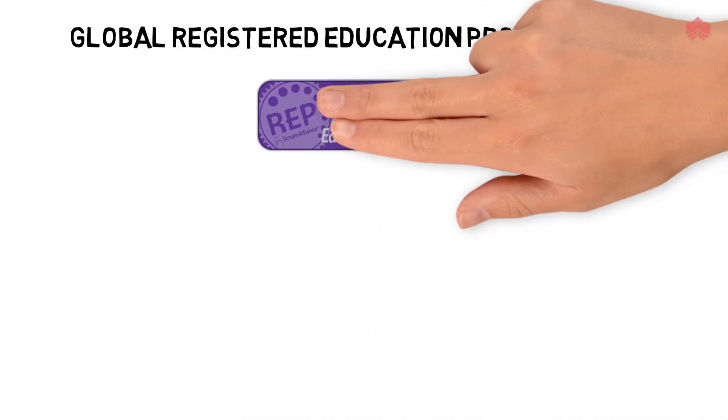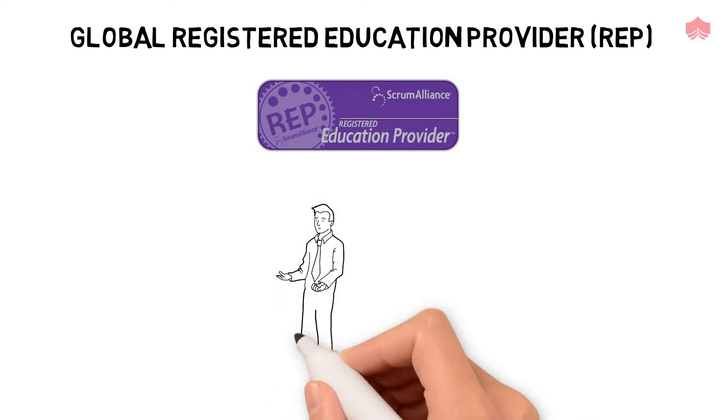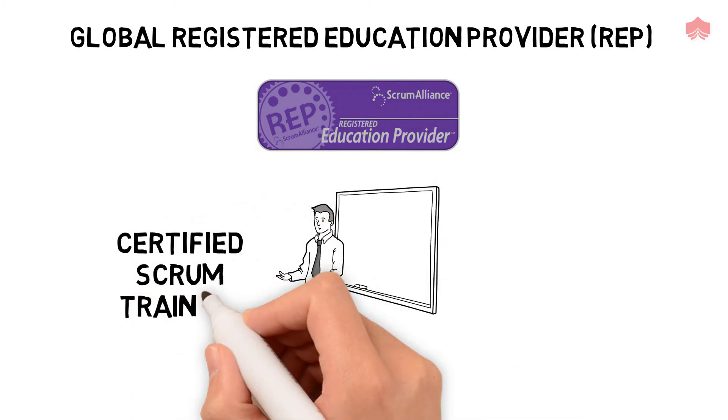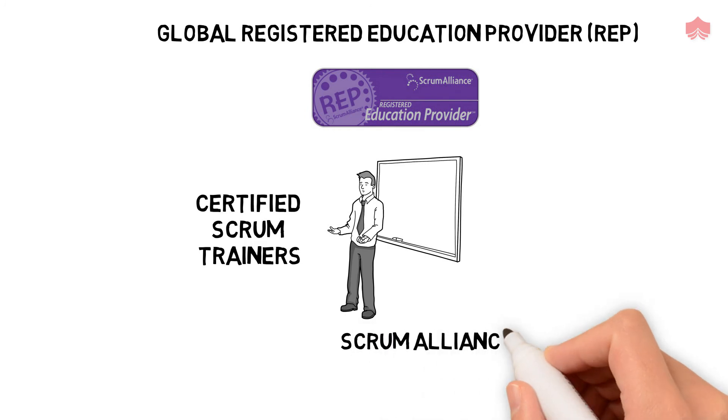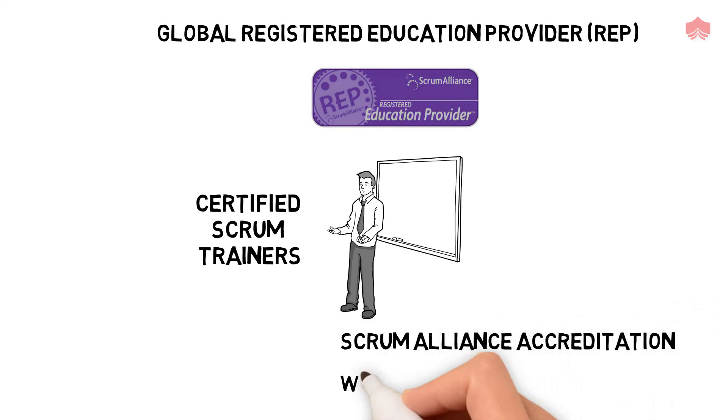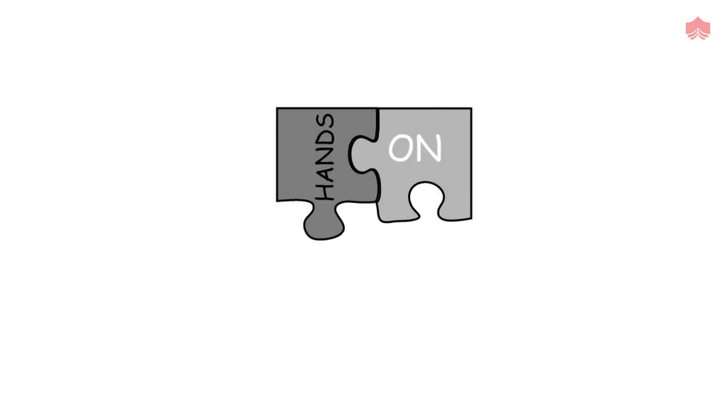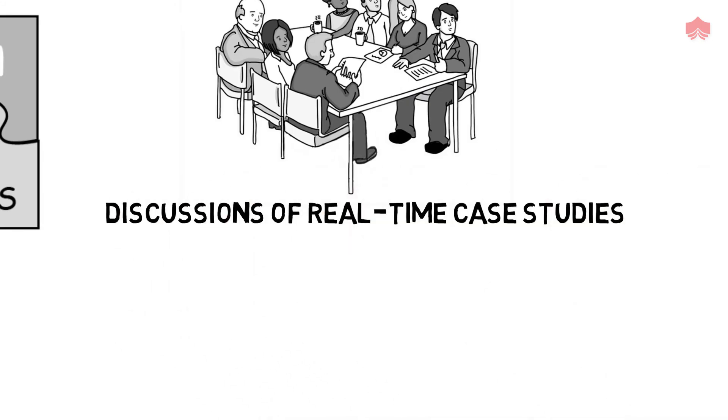Why should you choose KnowledgeHut? KnowledgeHut is a Global Registered Education Provider of Scrum Alliance. Our training sessions are conducted by certified Scrum trainers who have Scrum Alliance accreditation and are well-versed in all aspects of Scrum. You will learn through hands-on exercises and discussions of real-time case studies.